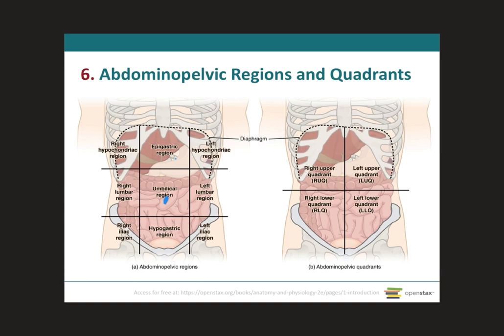Underneath, we have what we call the right iliac region. This bone over here, which is part of the pelvic girdle, is what we call the ilium, so this is your iliac region on the right side. On the left side, left iliac region. In the middle, hypo means under, so hypogastric means under the stomach — this region is definitely under the stomach. Try to understand what the words are telling you, and then you're not memorizing.